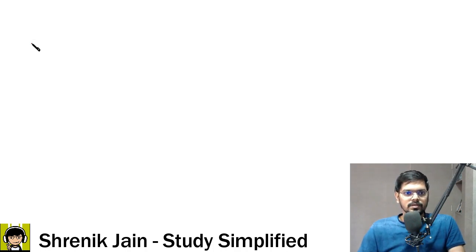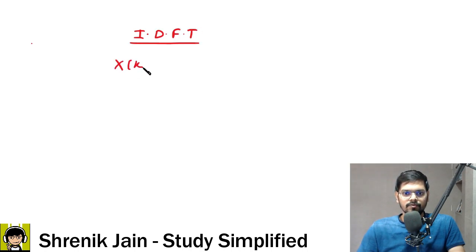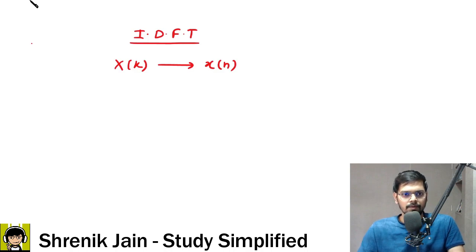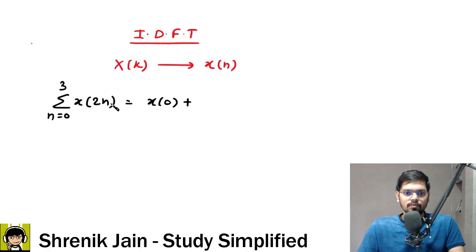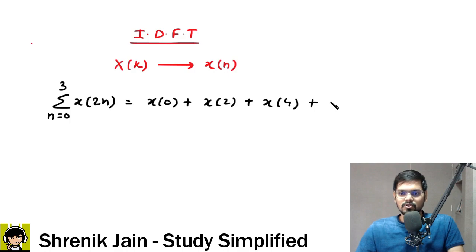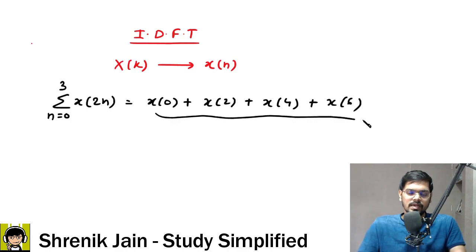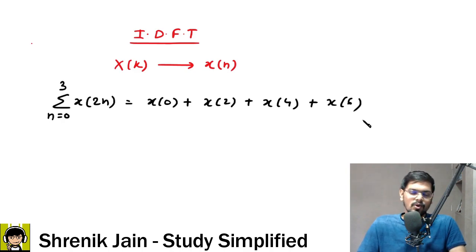The first point: the inverse DFT concept says use capital X(k), because it is given, and find the time domain signal x(n) using the IDFT formula. In our question, what we need is summation from n=0 to 3 of x(2n). When n=0 the signal becomes x(0), when n=1 it becomes x(2), when n=2 it becomes x(4), and when n=3 it becomes x(6). Many students found these 4 terms using IDFT and said the question is too lengthy to solve in 1 minute 30 seconds.